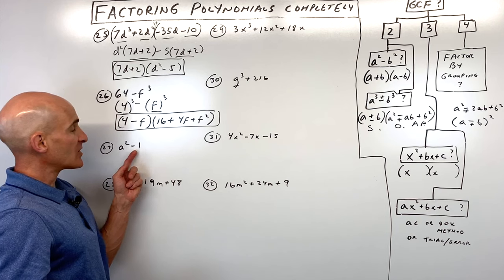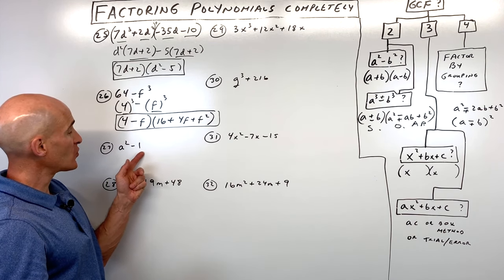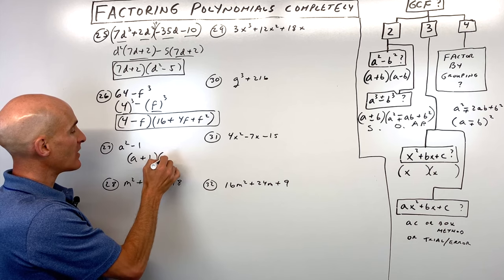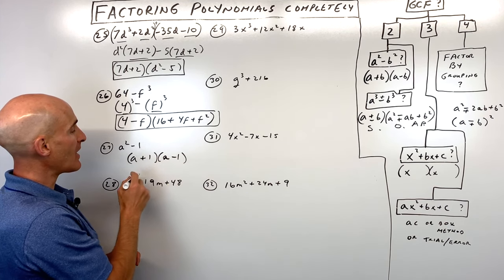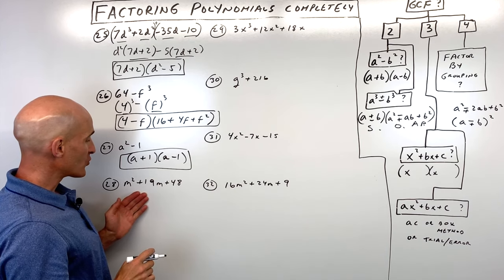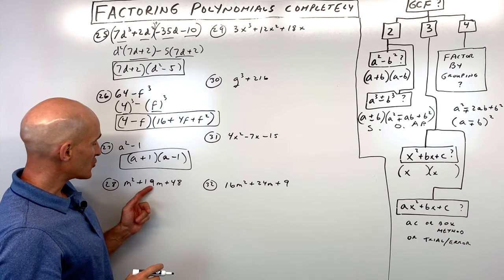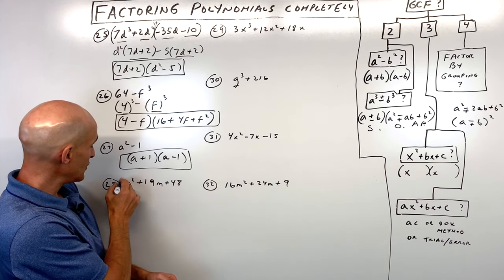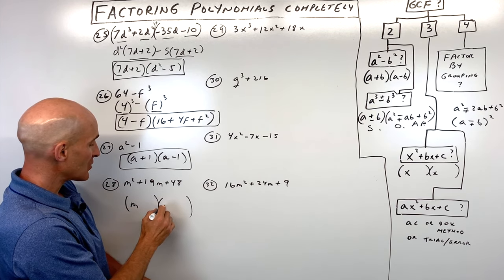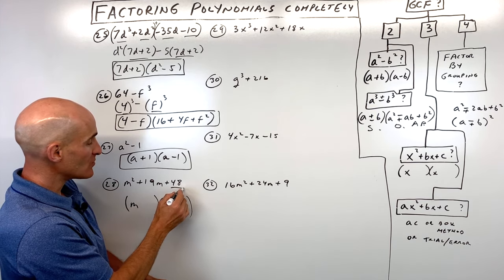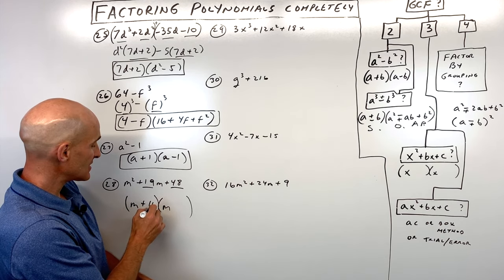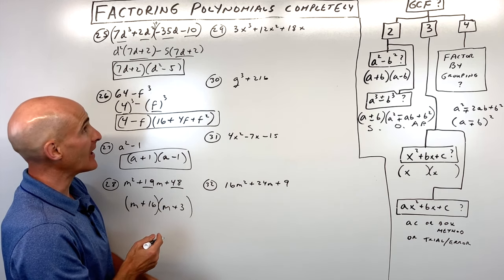Number twenty-seven has two terms — it looks like a difference of two squares — so we factor using the sum and difference pattern: a plus 1 times a minus 1. Number twenty-eight is a trinomial with leading coefficient 1. What two numbers multiply to 48 but add to 19? That's 16 and 3.